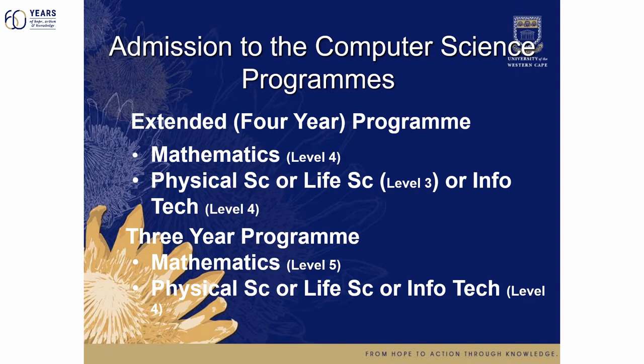The admission to computer science programs is as follows. We have what we call an extended or four-year program, where one of the key admission requirements is mathematics at level four and physical science or life sciences at level three, or information technology at level four. For the three-year program, you need mathematics at a slightly higher level — level five — along with physical science or life sciences or information technology at level four. You don't have to worry about this; the admission system will place you into the correct study program, be it the extended one or the three-year program.